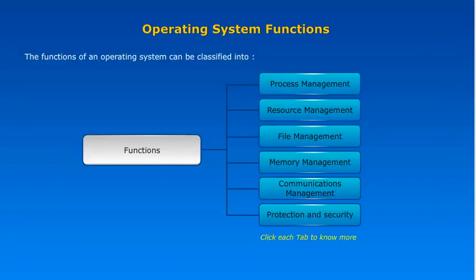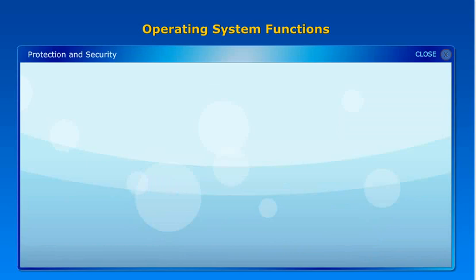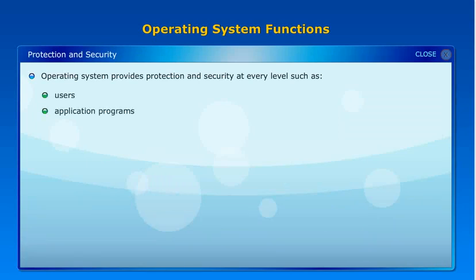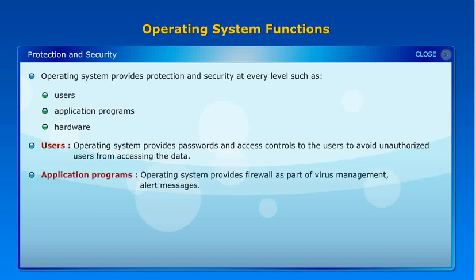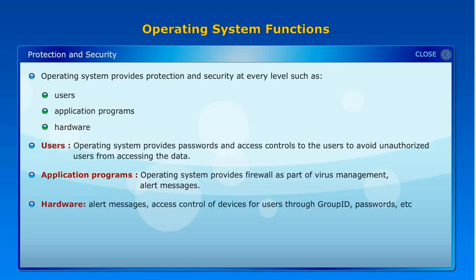Protection and Security: The operating system provides protection and security at every level, including users, application programs, and hardware. For users, the operating system provides passwords and access controls to avoid unauthorized users from accessing data. For application programs, the operating system provides firewall as part of virus management, alert messages, and access control of devices for users through group ID, passwords, etc.